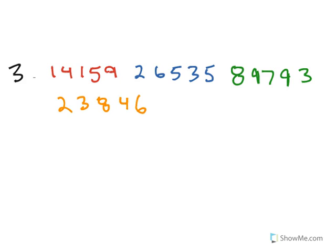So this is the number pi, or the number representation of pi, taken out to 20 digits. Now, currently, the record for the amount of numbers that pi has been taken out to is 10 trillion digits.